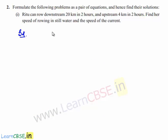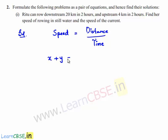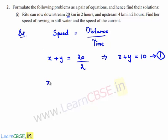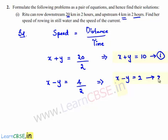Using speed = distance/time: for the downstream case, x + y = 20/2 = 10 — assume this as equation 1. For the upstream case, x - y = 4/2 = 2 — assume this as equation 2.